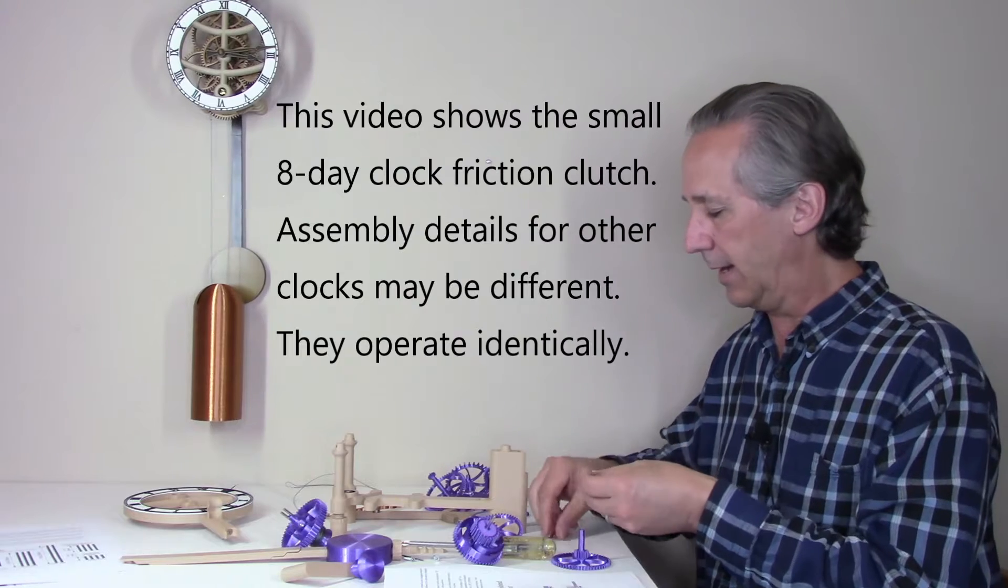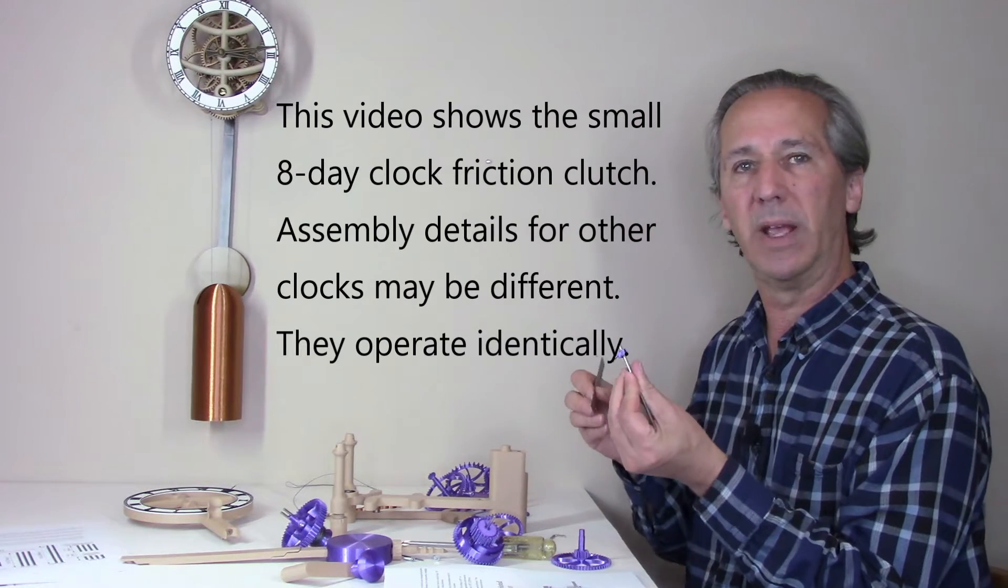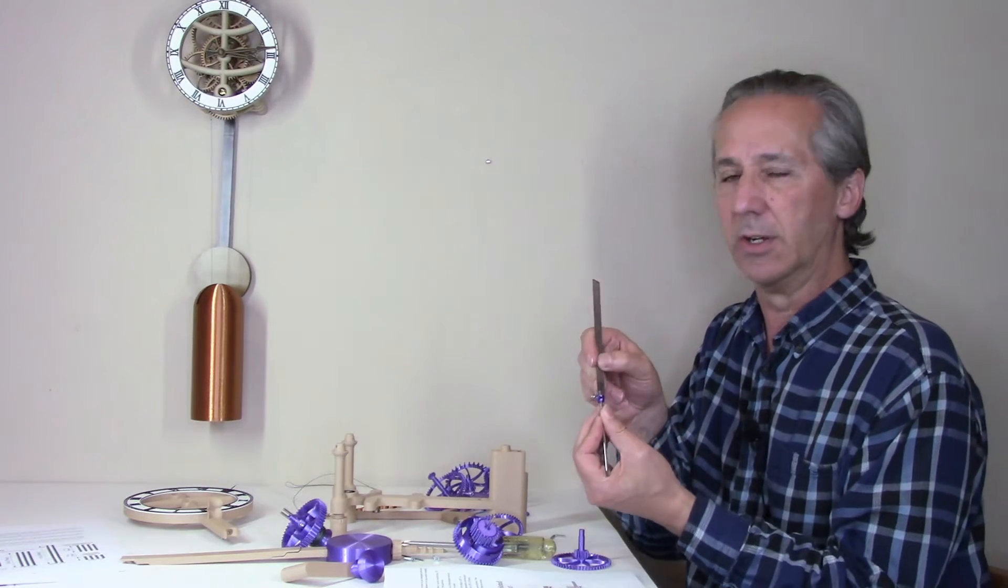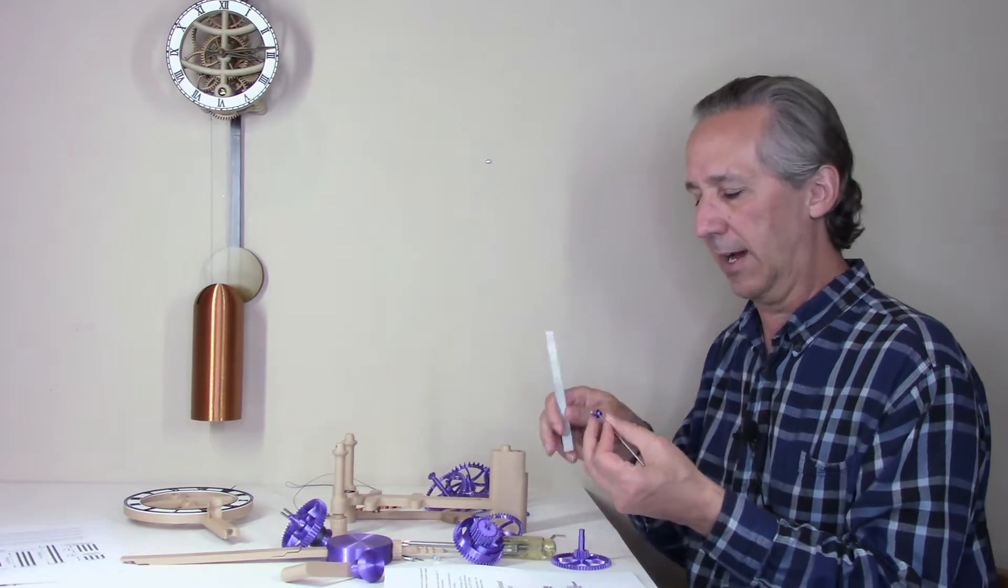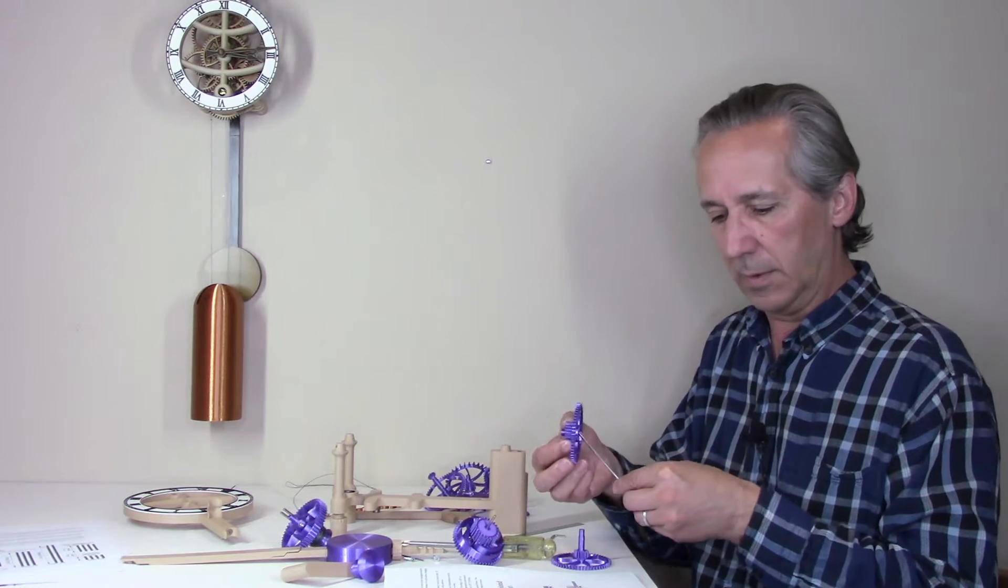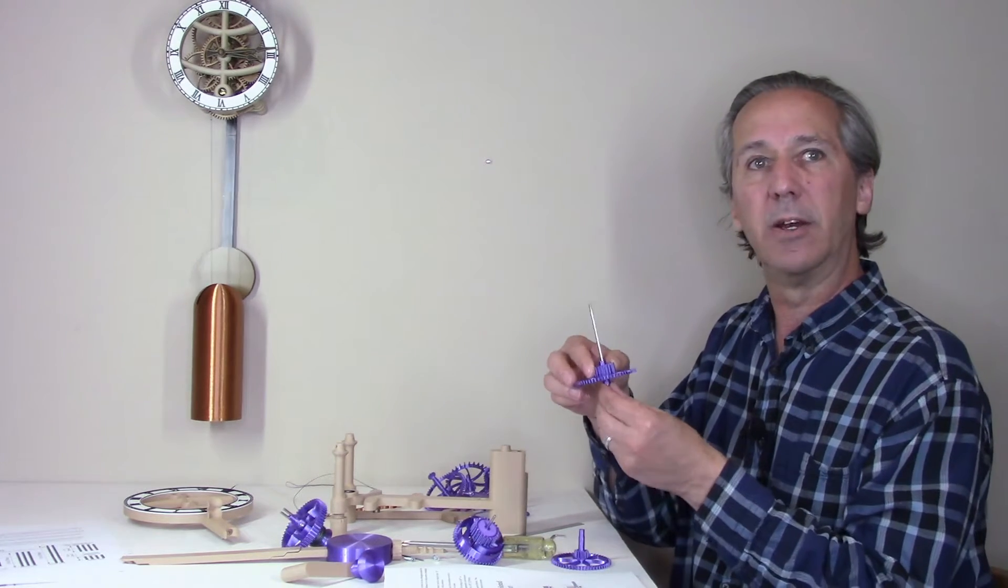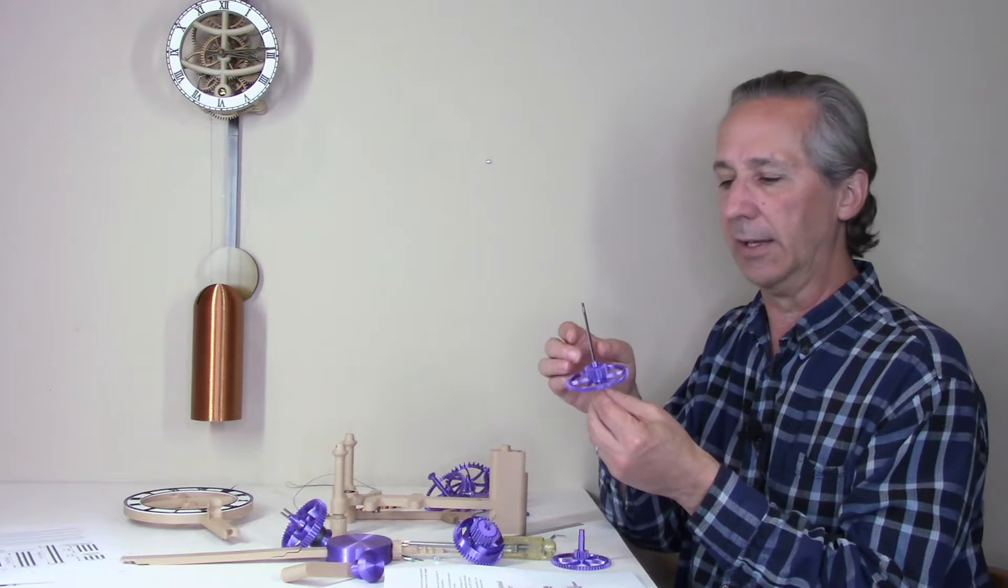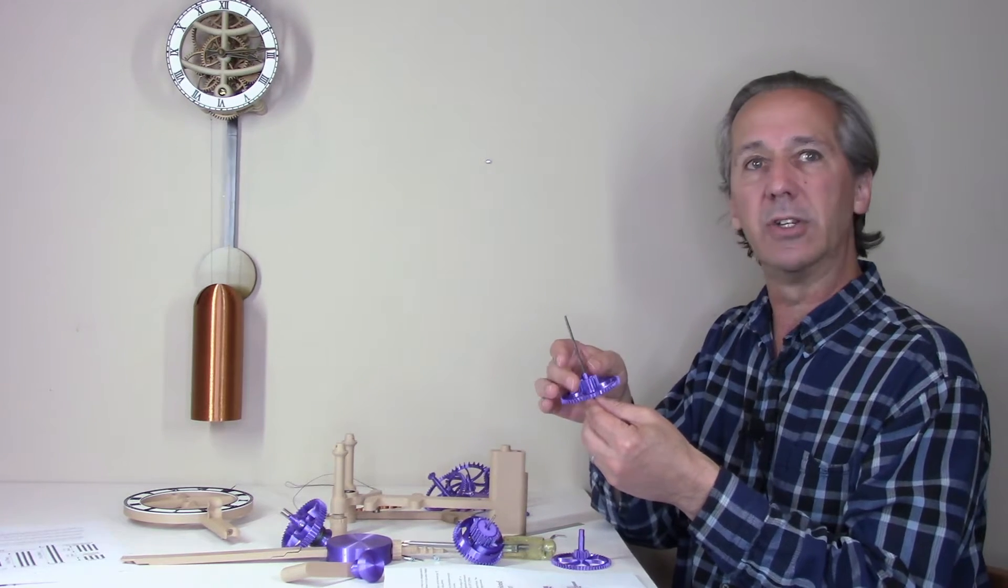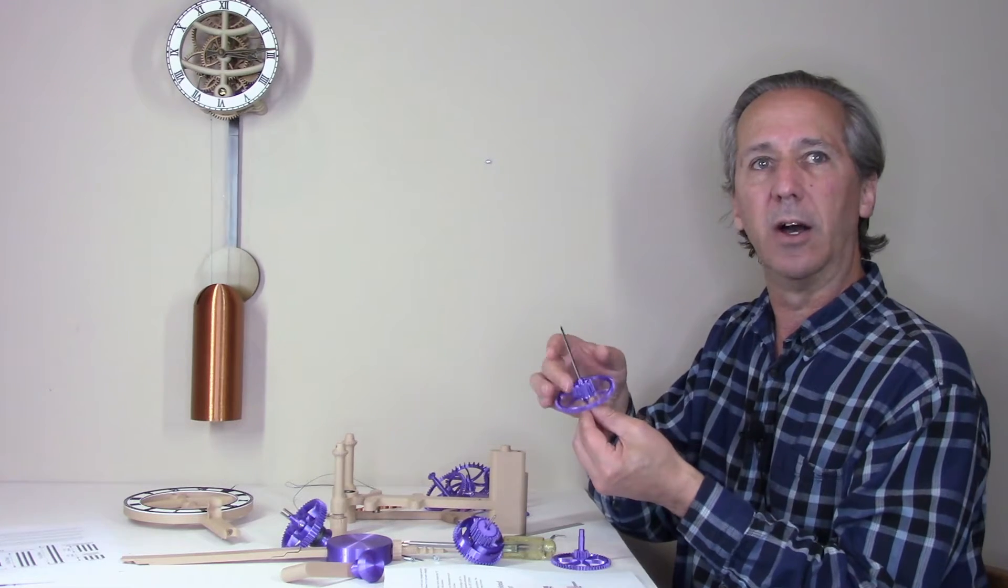It starts by adding a spacer 4A to the minute hand arbor with about a quarter of an inch of the arbor extending out the bottom, followed by gear 4A 5418, and the large gear needs to spin freely on the arbor.